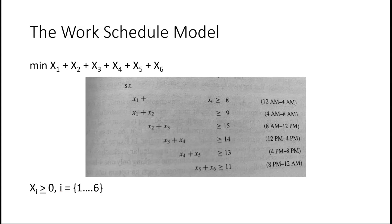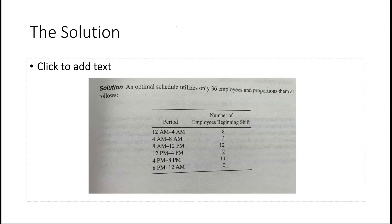We end up with this linear program problem: minimize X1 through X6, these different shifts, so that we can minimize the number of workers needed to create the optimal solution. Notice the constraints — there always has to be somebody working and each employee must be in one of those shifts. The book then discusses the solution that results from that. That's going to conclude our work today. I look forward to seeing you in the homework area. Thanks.